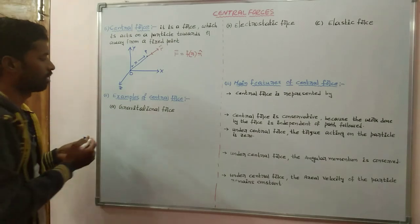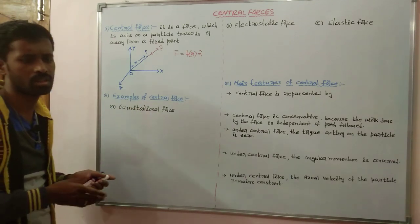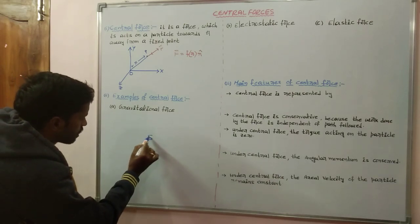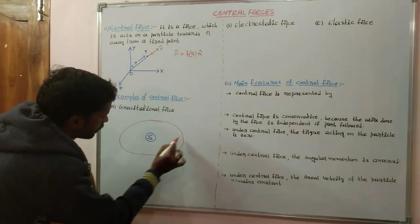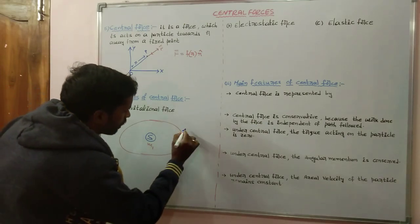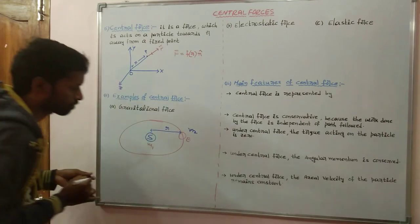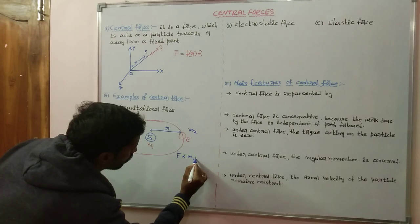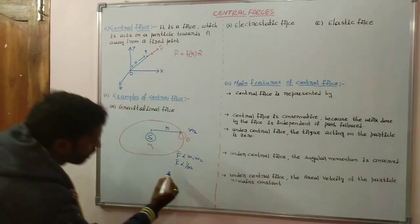The best example of central force is gravitational force — the force that exists between the sun and the earth. The earth revolves around the sun in an elliptical orbit. The mass of the sun is m1 and the mass of the earth is m2, and the distance between sun and earth is r. The force is directly proportional to the product of these two masses and inversely proportional to the square of the distance between them.